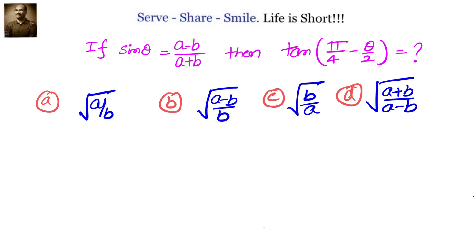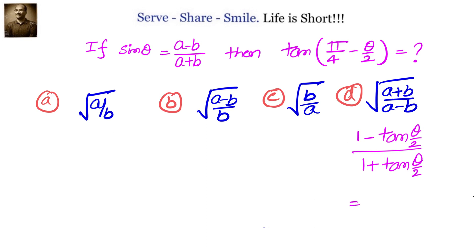To solve this problem, we'll start from what we need to find out — try to understand it and see if we can express it in terms of sin θ, so that we can substitute the known value. So first, we'll write down tan(π/4 minus θ/2) as (1 minus tan(θ/2)) divided by (1 plus tan(θ/2)).